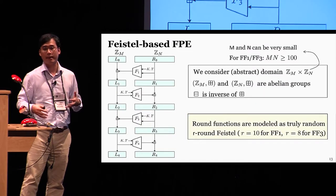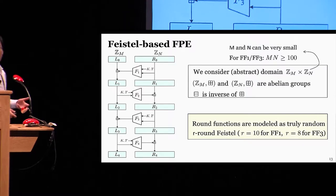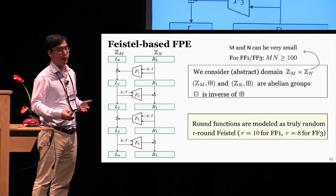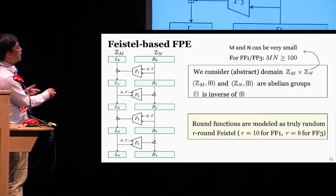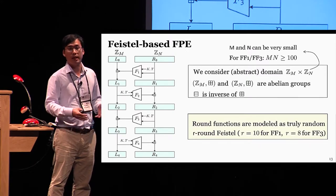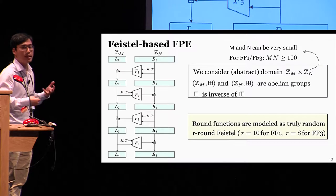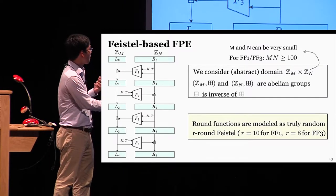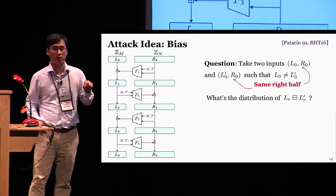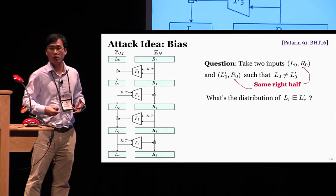Before I get into the details of the attack, let me briefly recall a couple of things about Feistel networks. This picture is a four-round Feistel, but we will consider a general R-round Feistel, where R is 10 for FF1 and 8 for FF3. The domain here is a product Z_n times Z_m, where M and N can be pretty small — remember there are applications where the product MN is just 100. And because the domain is non-binary, instead of a regular XOR we would consider a general group operator plus. The key idea in our attack is that when you encrypt using a Feistel, it exhibits a certain bias. This dates back to a paper by Patarin in 1991, and it was also exploited in the BST attack.